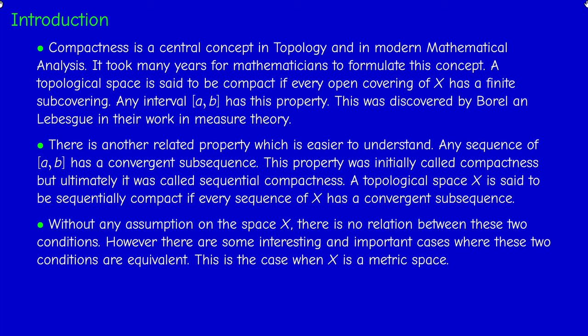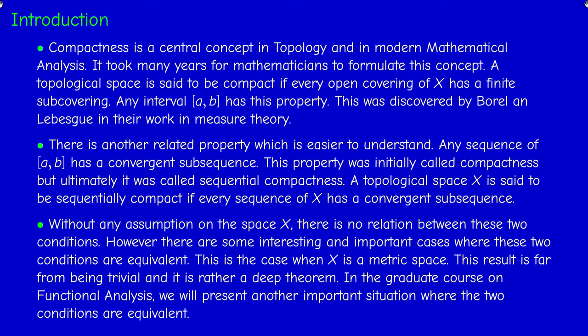Sometimes we will work in the context of a general topological space because the argument does not depend directly on the notion of distance, but we are mainly interested in metric spaces. In a metric space, compactness and sequential compactness are equivalent — a metric space is compact if and only if it is sequentially compact. This is not a trivial result; we will prove it in the next section.